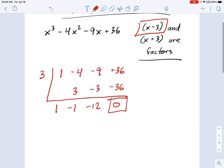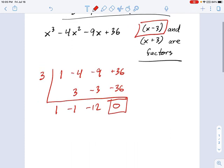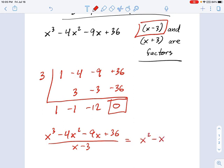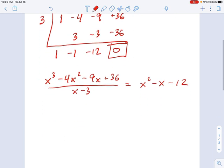So now what? Now what this is telling us is that x cubed minus 4x squared minus 9x plus 36 over x minus 3 equals x squared minus x minus 12. Now maybe you're seeing where the factoring is, maybe not.